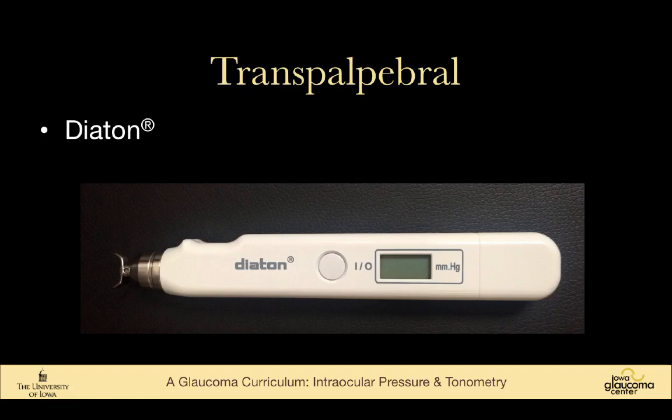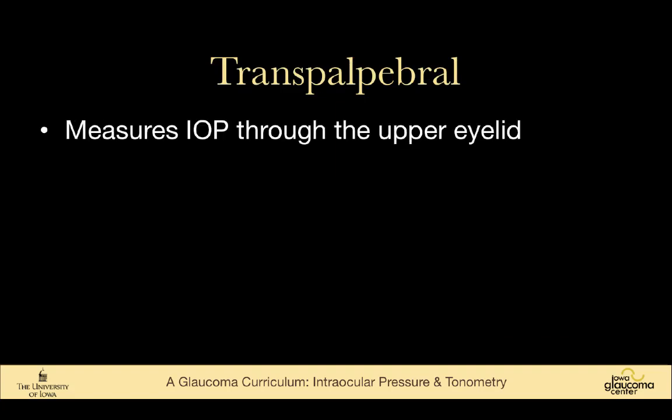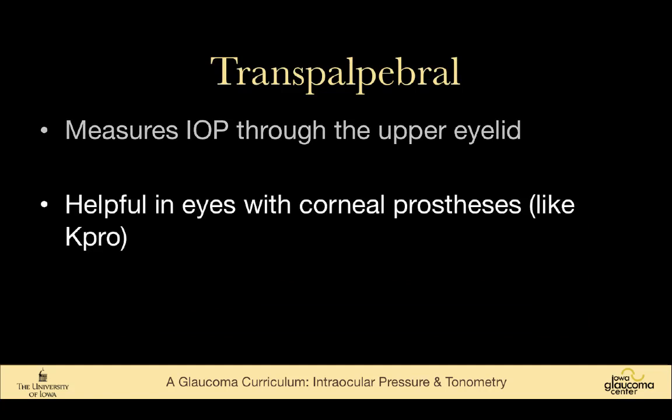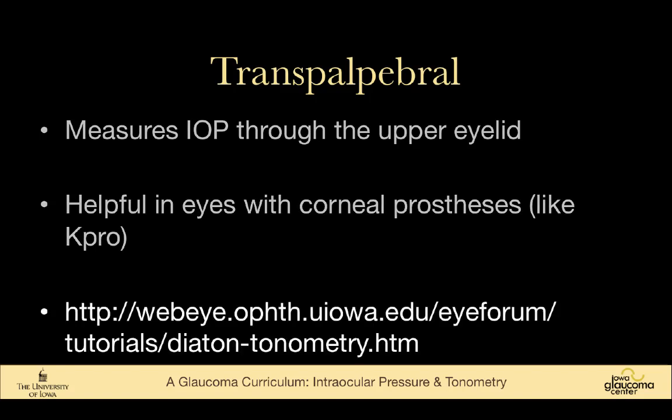Transpalpebral tonometry, called the Diaton, measures intraocular pressure through the upper eyelid. It's helpful in eyes with corneal prostheses like the K-Pro. The instructions for the Diaton are almost impossible to understand, but one of our residents, Justin Risma, has a good tutorial on Eye Rounds on how to use it. If used correctly, it's fairly accurate at giving an approximation of intraocular pressure.